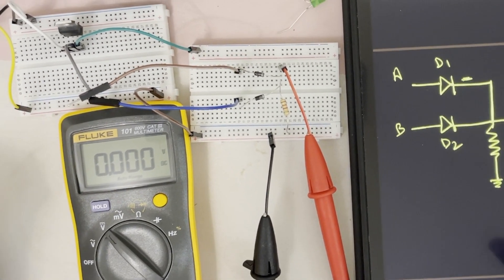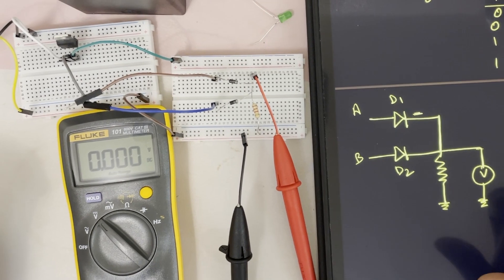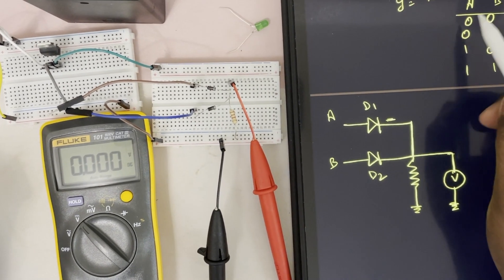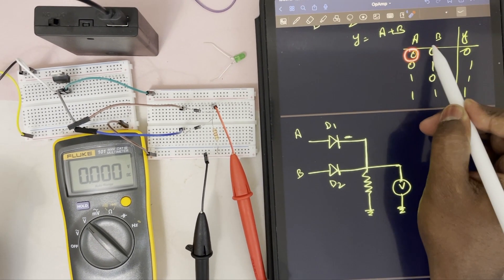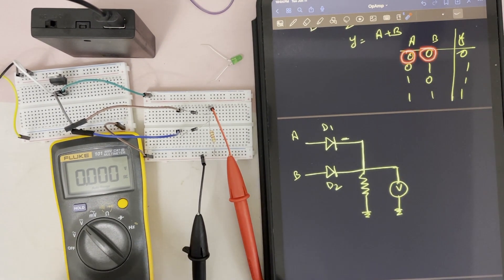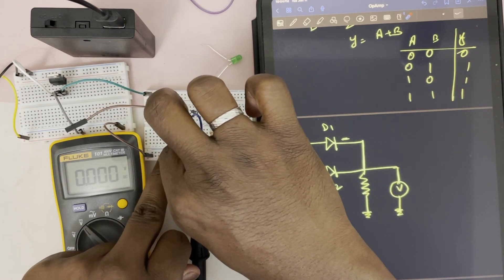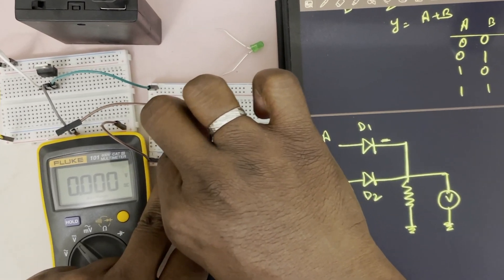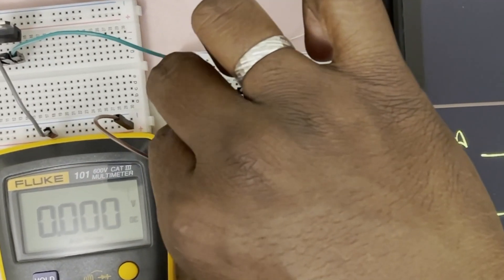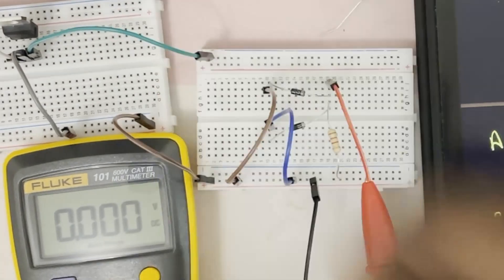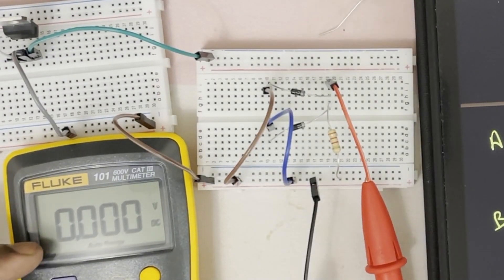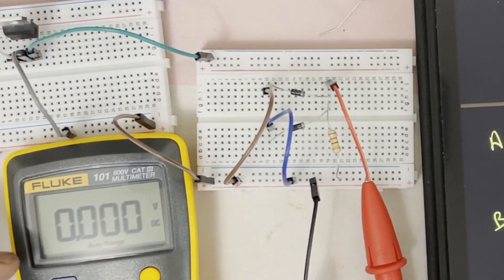To cross-check: A should be 0 and B should be 0. So B is 0 and A is also 0. The output is 0 volt. That means the first condition is satisfied.